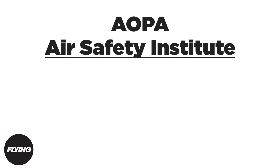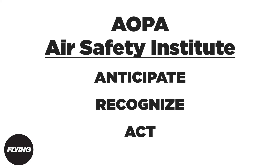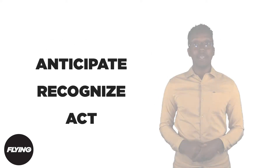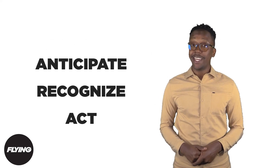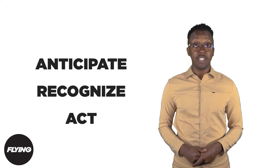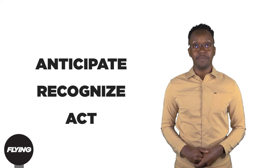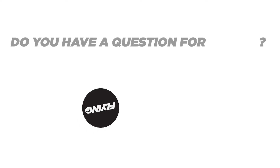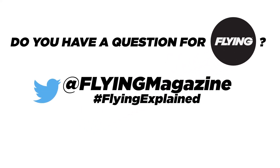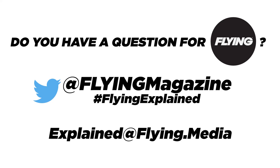When in flight, the Air Safety Institute recommends this three-part plan: anticipate, recognize, and act. Anticipating means knowing the conditions you're flying into at any given moment. Recognize when icing occurs and act accordingly after evaluating the situation. Do you have a question about flying? Tweet us at Flying Magazine on Twitter using the hashtag FlyingExplained, or email us at explained@flying.media.